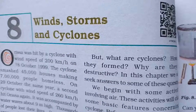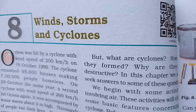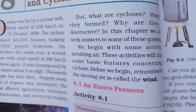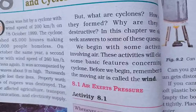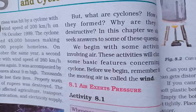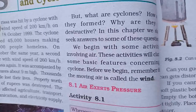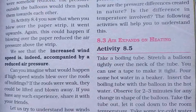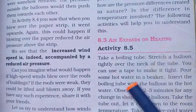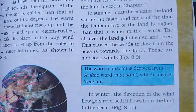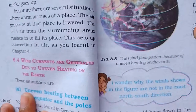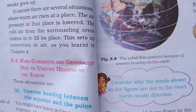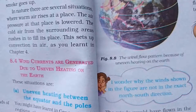Friends, in this unit we are learning about Orissa's Cyclone. Then we discuss about Air Exerts Pressure and High Speed Winds are accompanied by Reduced Air Pressure. Then we learn about Air Expanding on Heating and Wind Currents generated due to Uneven Heating on the Earth — including uneven heating between the equator and the poles. Now today we are learning about the next topic.